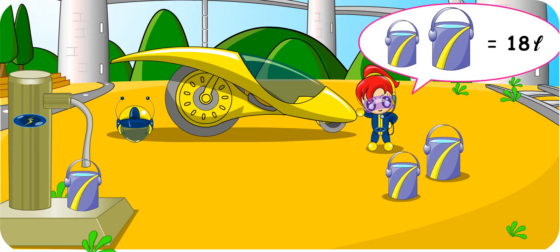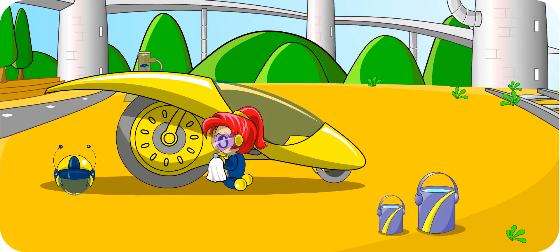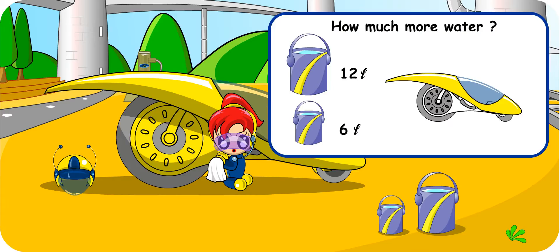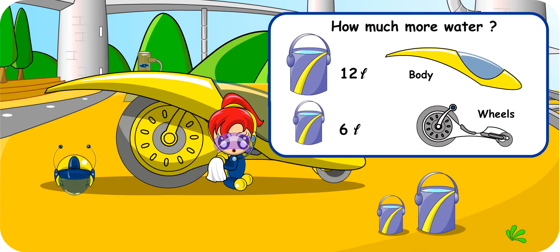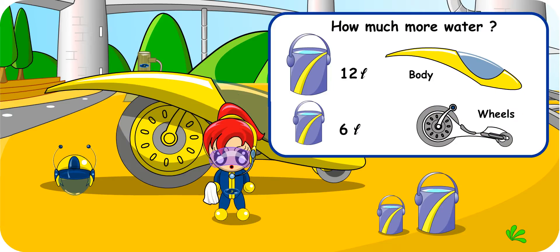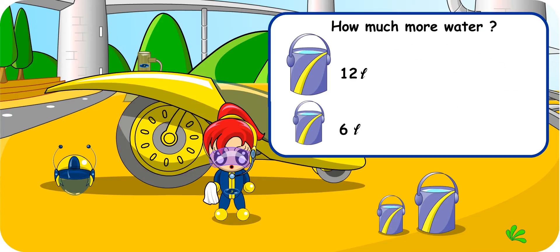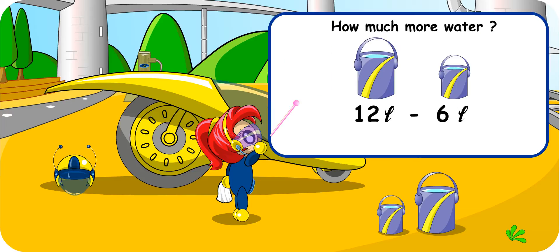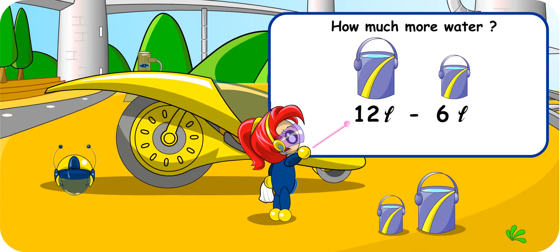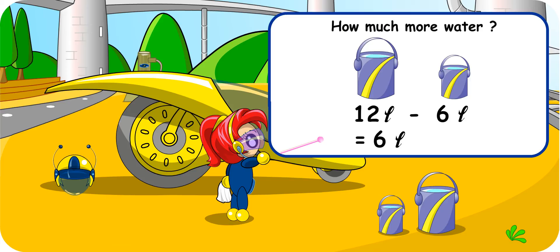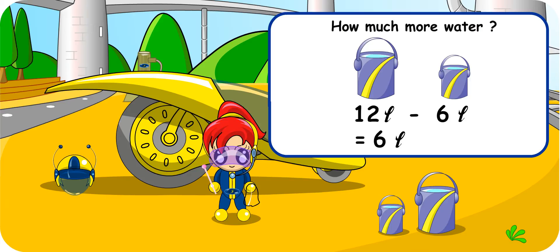Good work, Turbo Girl. Do you know how much more water you have used for washing the body of the Turbo Mobile than the wheels? To find how much more water I have used, I have to find the difference in the amount of water. I have to subtract 6 litres from 12 litres. 12 litres minus 6 litres equals 6 litres. Good!